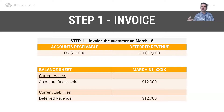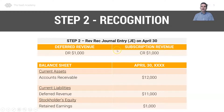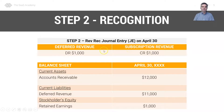We cannot recognize this revenue because we have not earned it — the subscription starts on April 1st. Now we're at the end of April and we can recognize revenue. We're one month into this contract, one month into the 12 months of the $12,000 subscription. So we apply the revenue recognition principle: we debit deferred revenue for $1,000, which decreases our deferred revenue balance, and we credit subscription revenue for $1,000.